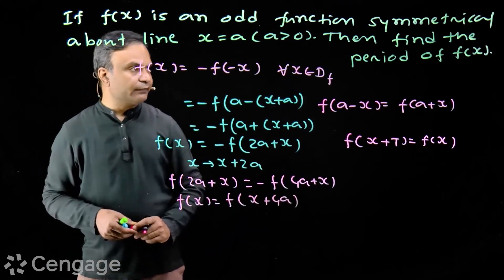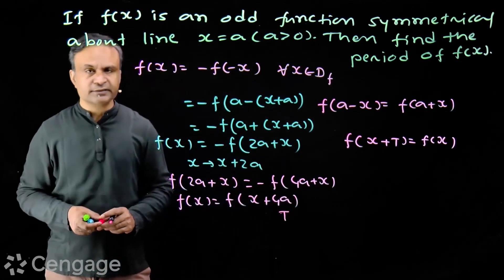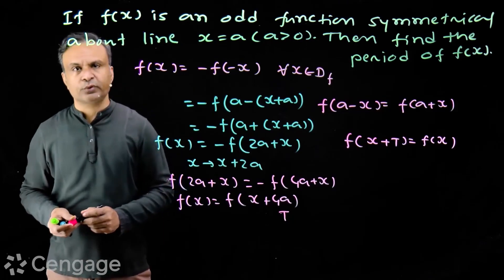So function f(x) is periodic and its period is 4a. Here a is greater than 0. Period is always positive, so period will be 4a.